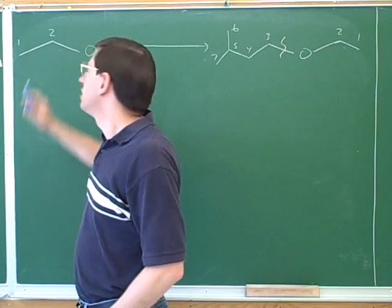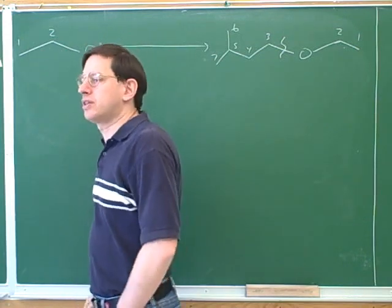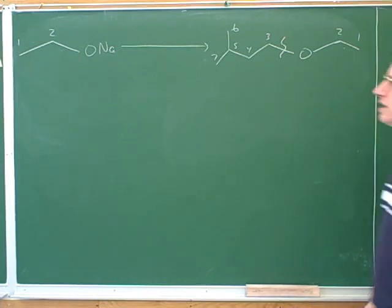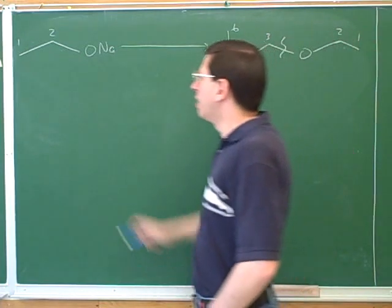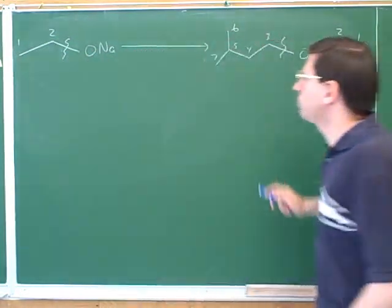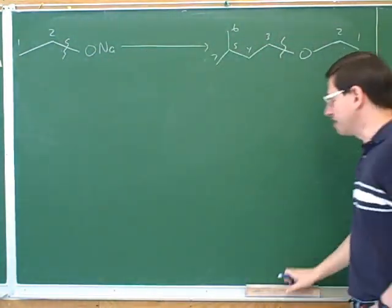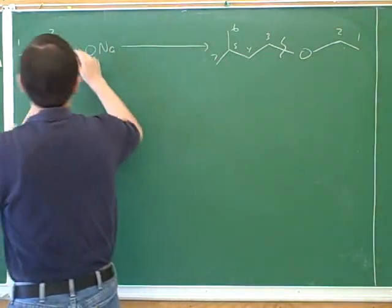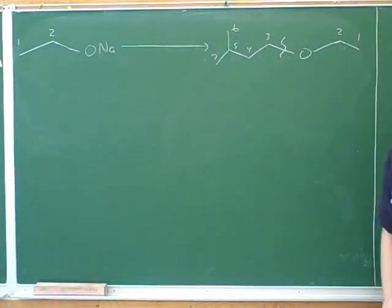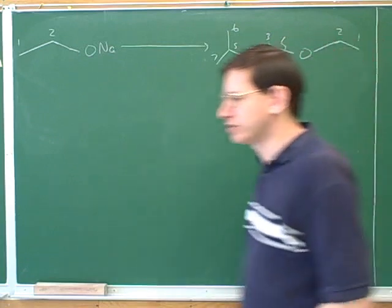Looking at the starting material, are there any bonds we need to break to make the product? No. That's where I went wrong — originally I squiggled the two and oxygen bond, but if we look at the product, we don't want to break that bond, we want to keep it. So in this case, there are no bonds that we need to break in the starting material, but we need to form a bond between the oxygen and number three.